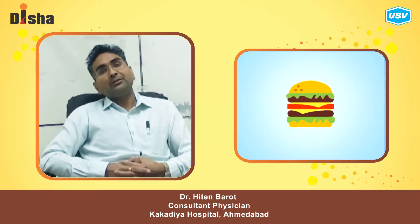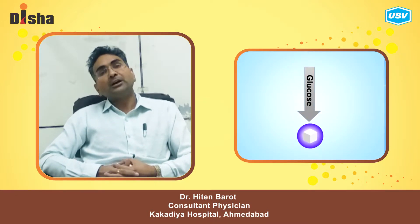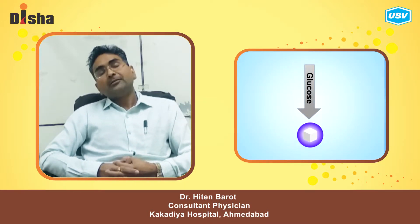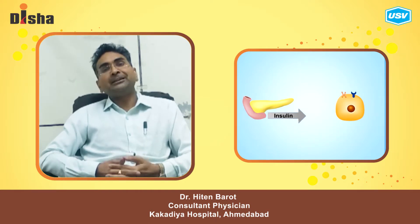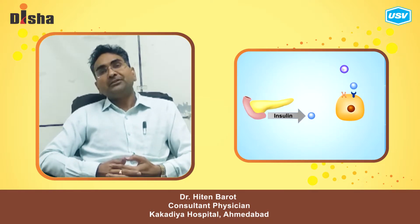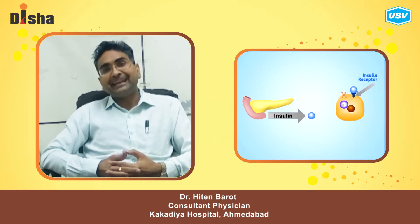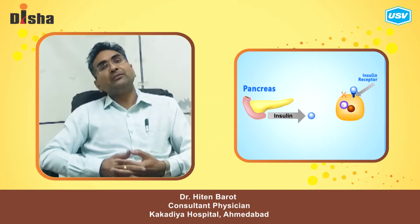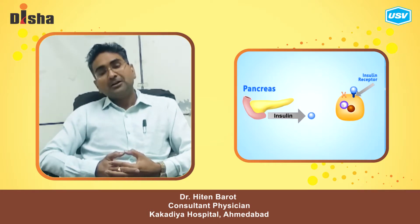What is blood sugar? Blood glucose is obtained from our food, and it is monitored by insulin, which is produced by the beta cells of the pancreas. These beta cells release insulin, which controls our blood sugar level.